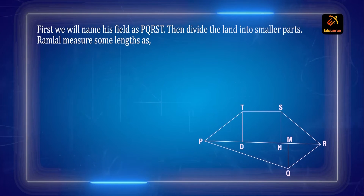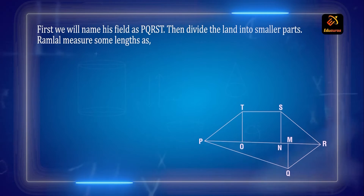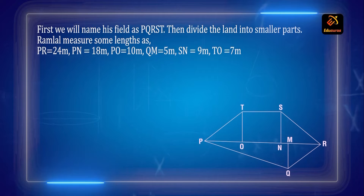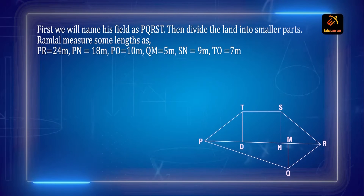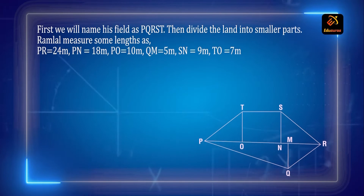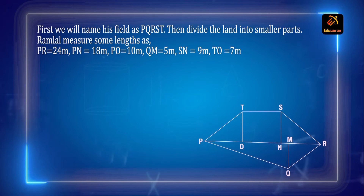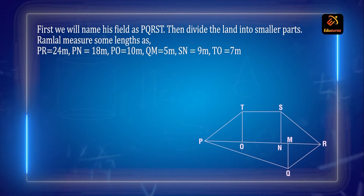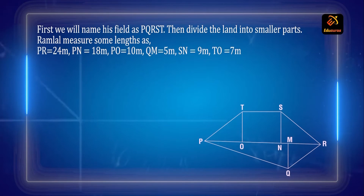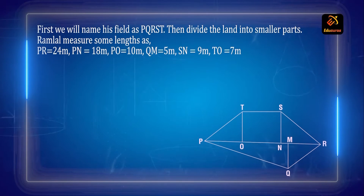Ramla measured some of the lengths as: PR = 24 m, PN = 18 m, PO = 10 m, QM = 5 m, SN = 9 m, and TO = 7 m.